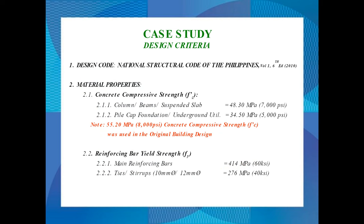For the design code, we use the NSCP 2010 6th Edition. For material properties, the concrete strength was constrained by the contractor — they preferred 7,000 PSI. For pile cap foundations, we use 5,000 PSI. For reinforcing bars, we use 60 KSI for main reinforcing bars and 40 KSI for the ties and stirrups.